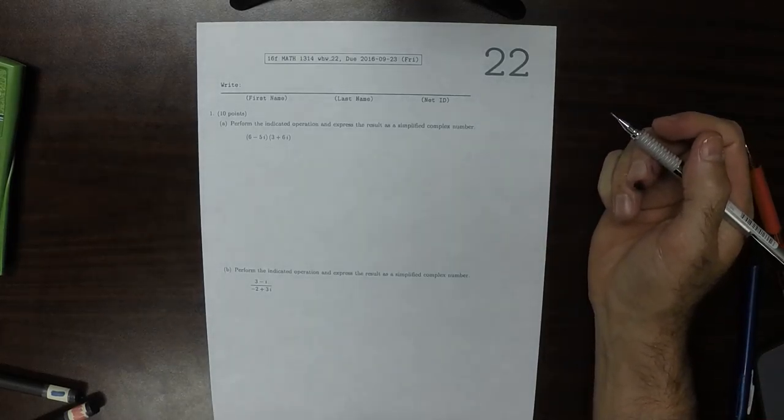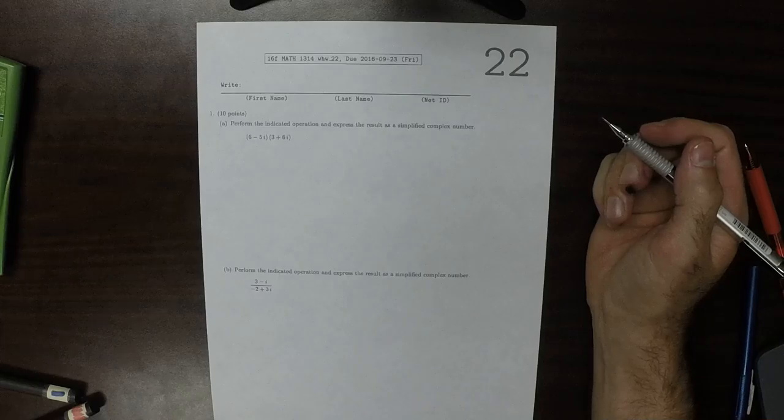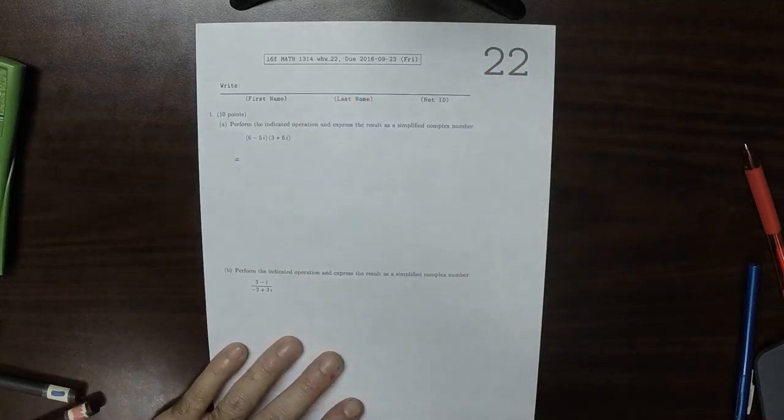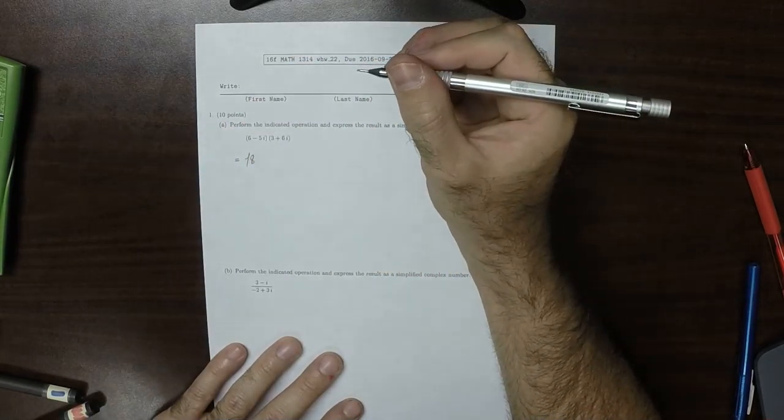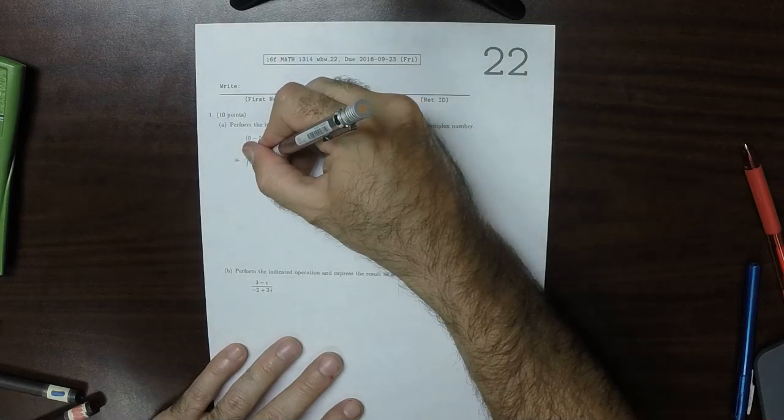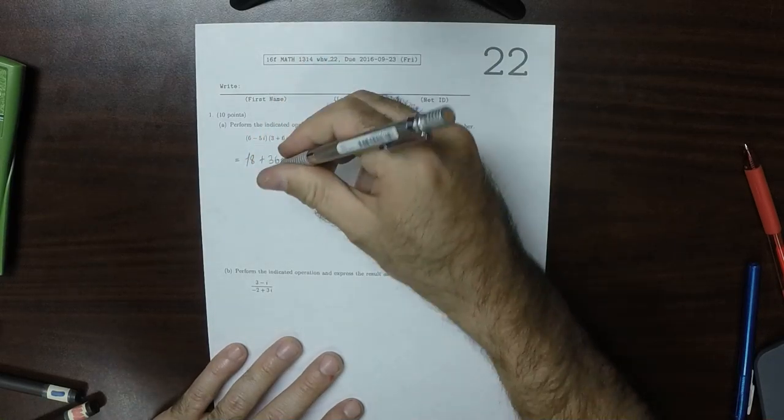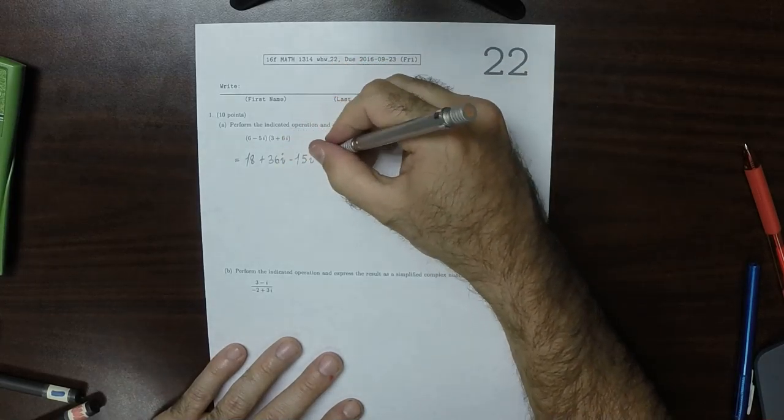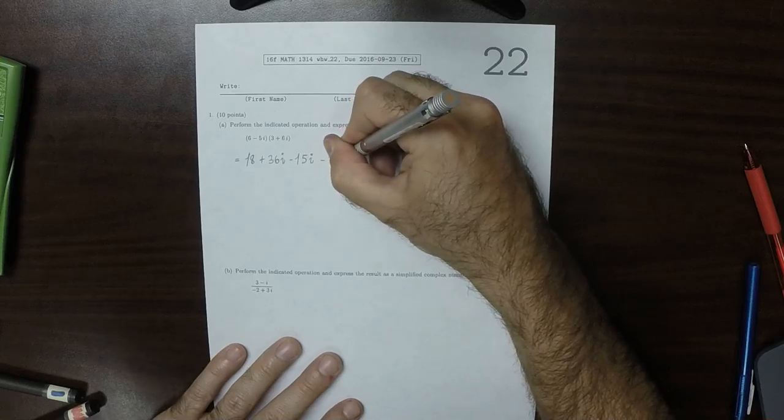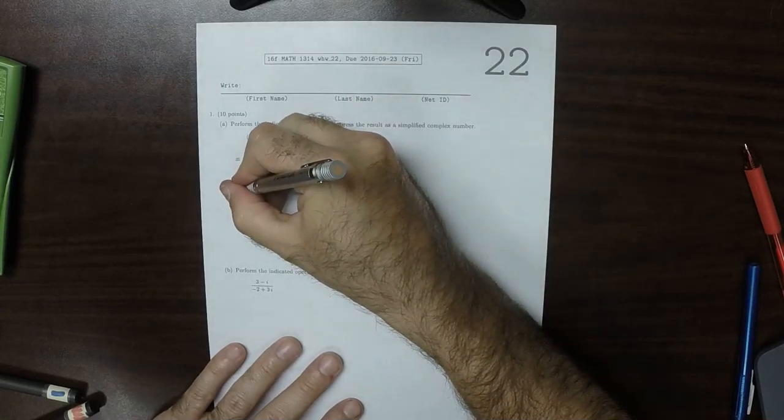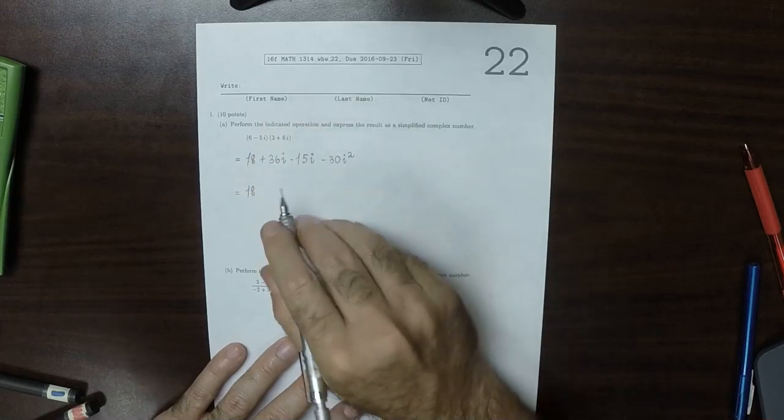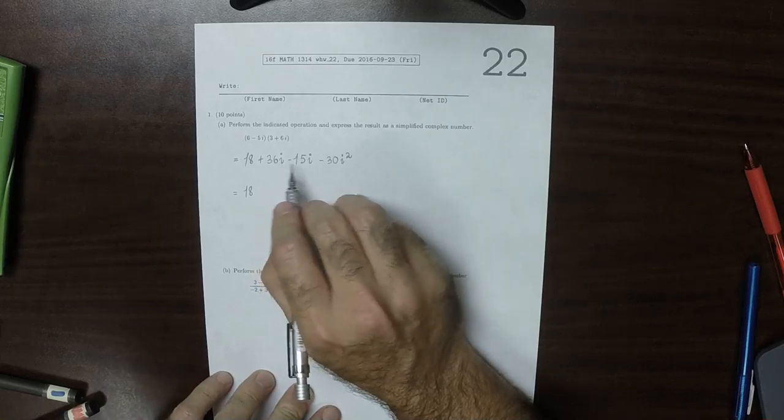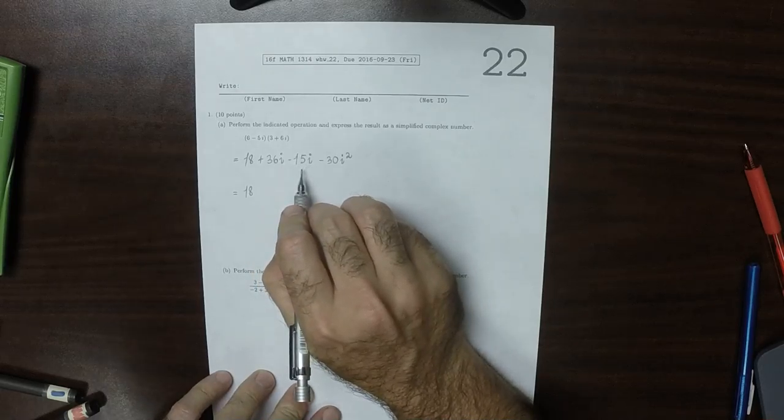This is the solution to written homework 22. The first one can be carried out with FOIL, so that would be 18 plus 36i minus 15i, and then minus 30i squared. That would be 18, and then the i's combined.